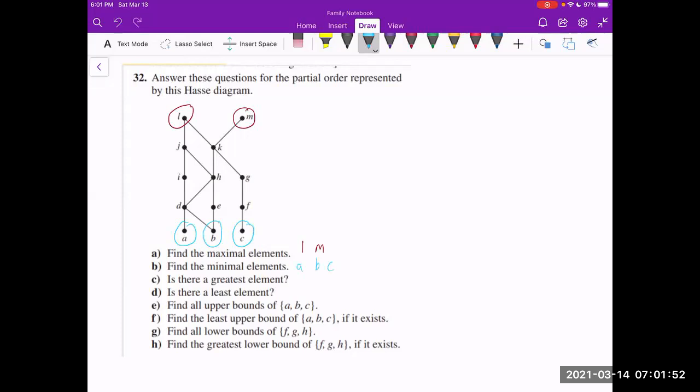Now, let's look at this part C that's asking, do we have a greatest element? And a greatest element exists if and only if we have exactly one maximal element. So in this case, we have two, so there is no greatest element.